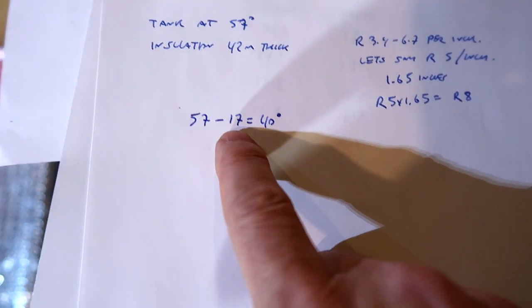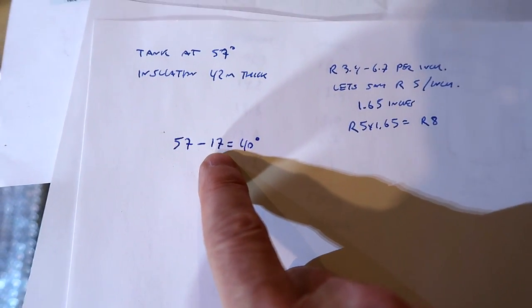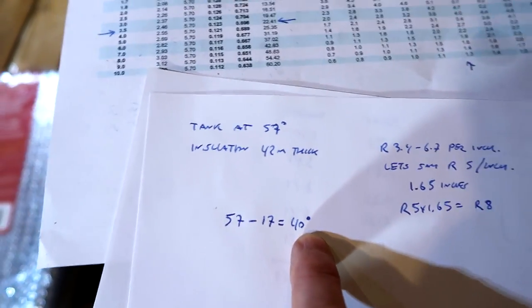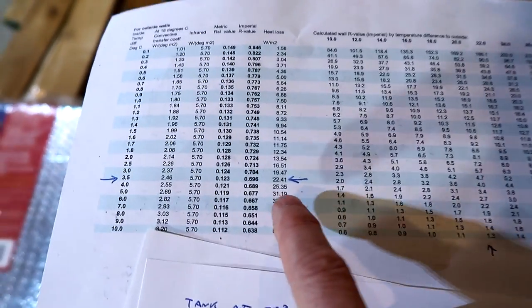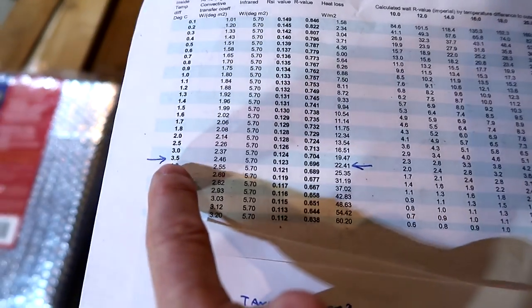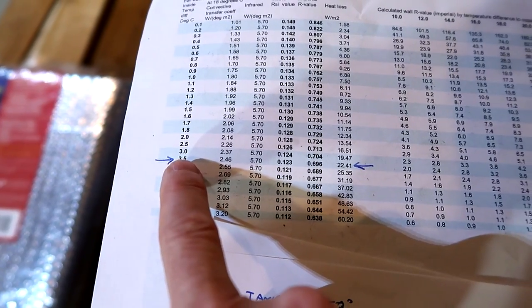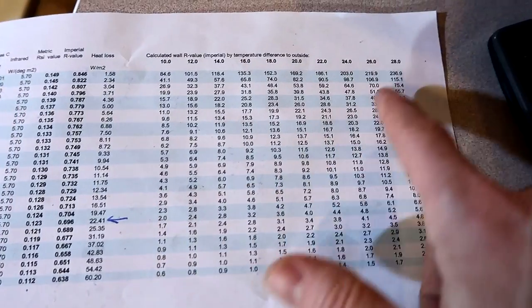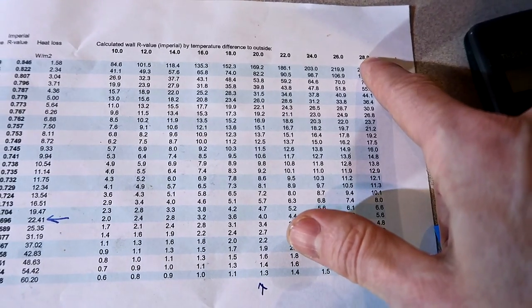57 degrees minus 17 degrees for the tank walls is a 40 degree temperature difference. Going back to my spreadsheet, with a 3.5 degree temperature difference between the walls and ambient, I have to look up a column for 40 degrees, but I'm only going to 28 degrees.